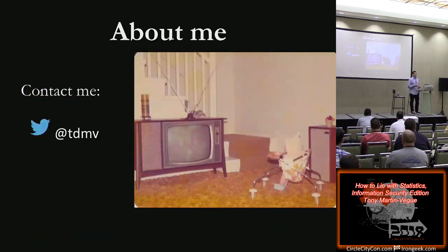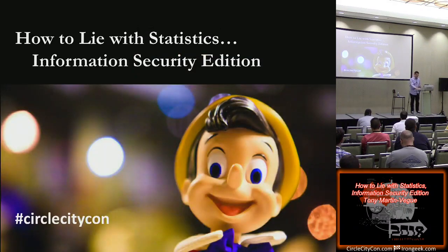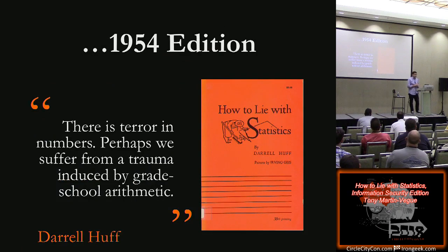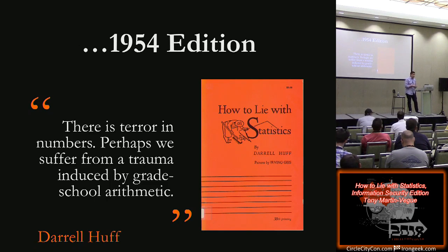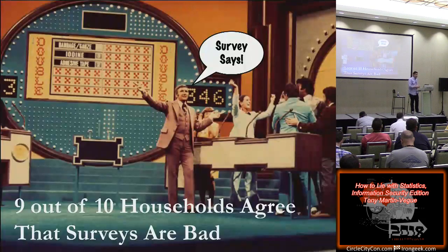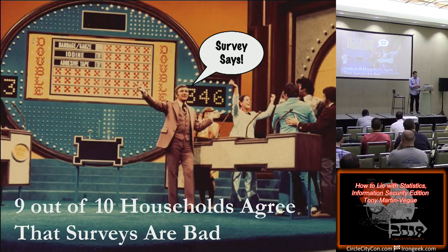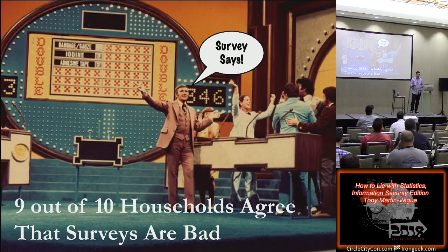What I've done here is taken the foundation that his book set about 60 years ago and I'm trying to look at it from an information security perspective. I think at the end of this presentation, you'll agree that a lot of Huff's foundational work is just as relevant today as it was back then. We're going to go over some classic ways that numbers and statistics are used to bend the truth. First up to bat is surveys. Did you know that nine out of ten households agree that surveys are bad? But what households, right?